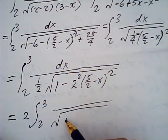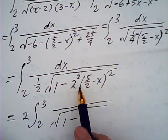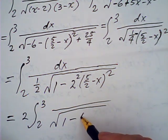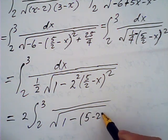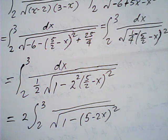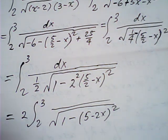And this is 1 minus - this one goes inside the bracket becomes 2, 2, 2 - so we can have 5 minus 2x square. Now then, see the formula.